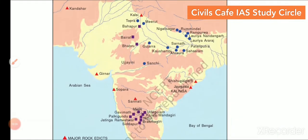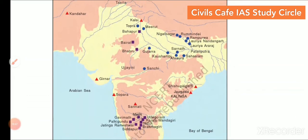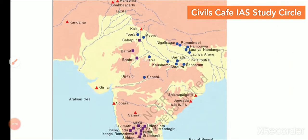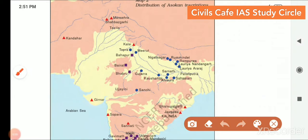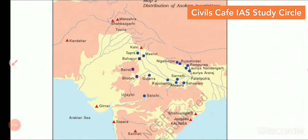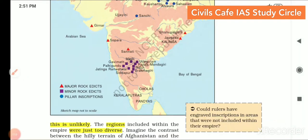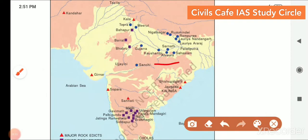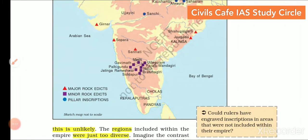The map shows the distribution of rock edicts and stupas. Major rock edicts can be seen in Kandahar, Shahbazgarhi, Kalsi, Girnar, Sopara, Sannati, etc. Minor rock edicts have a concentration in the south, especially in the Andhra region. Pillar inscriptions show a concentration in a particular area. With that, we can derive certain questions for examination purposes.